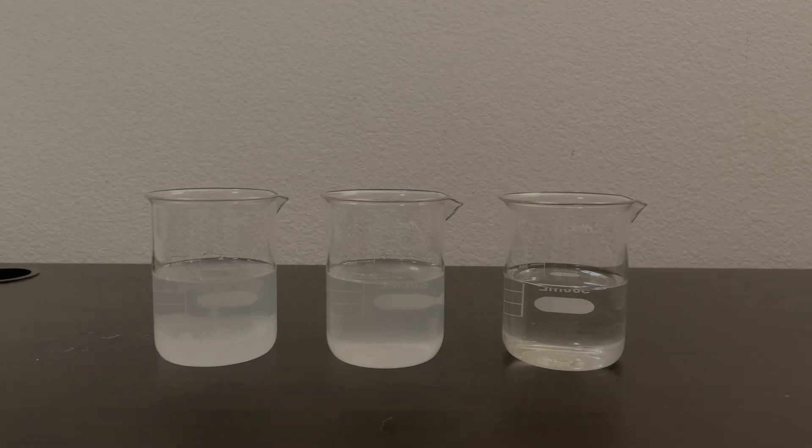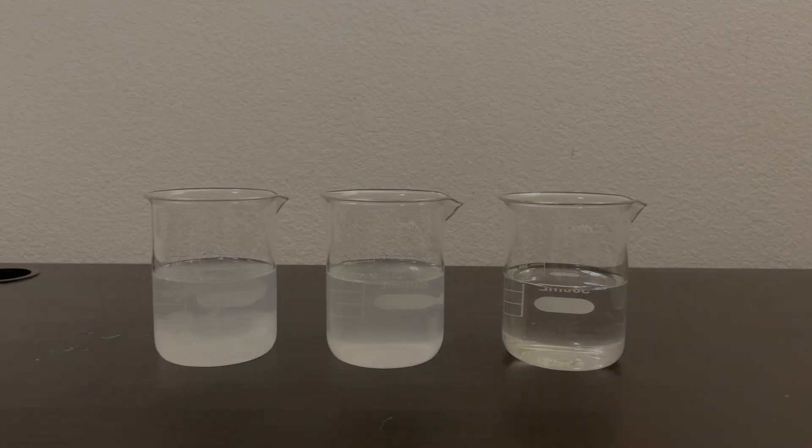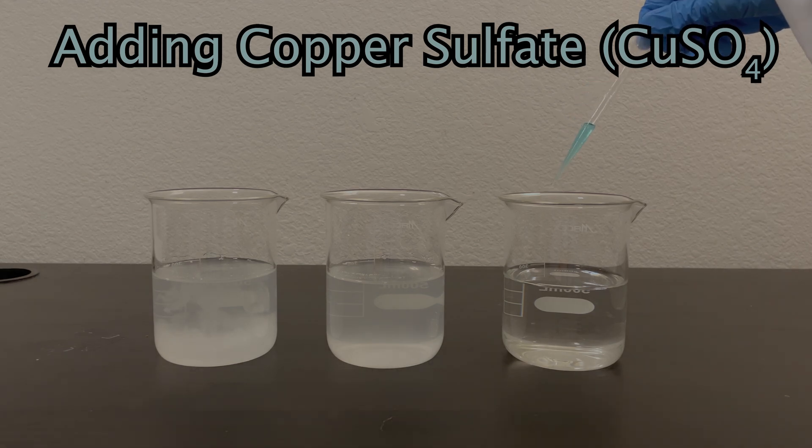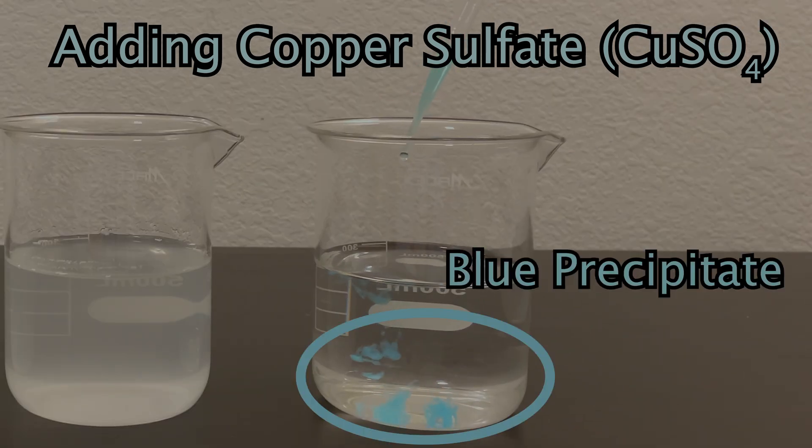In the beaker on the right, I'm going to add a few drops of copper sulfate. And you can see a nice blue precipitate forms.